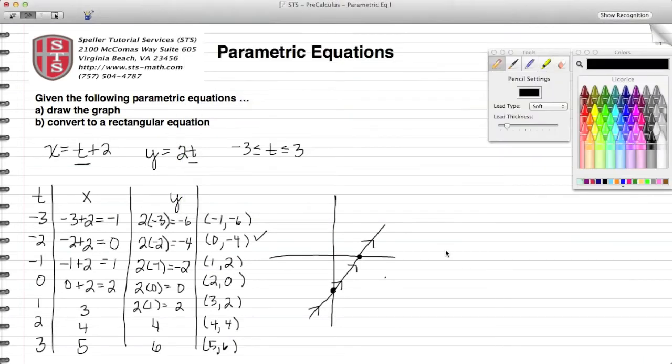That wraps up everything for part A. Let's put the calculator away for now and move on to part B. In part B, we need to convert this parametric equation into a rectangular equation. Basically stated, that means eliminate the T parameter and keep everything in terms of X and Y.